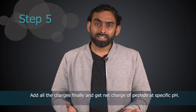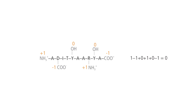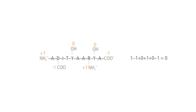The final step is to add all the charges. Starting from the N terminal to C terminal: the N terminal has +1, D has 0 charge, Y has 0, R has +1, Y has 0, and the C terminal alanine has −1 charge. Adding all these values gives a total charge of zero. Therefore, the given peptide sequence at pH 7 has a net charge of zero.